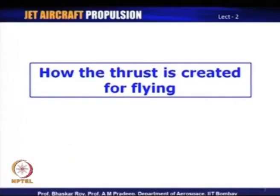Aircraft is a flying body. The needs of the flight of an aircraft are to be met with the propulsive system. The propulsion system we are creating essentially goes with the aircraft — it is part of the aircraft, sometimes embedded within the aircraft. Let us take a look at how the thrust is created for flying. Flying is our main object and thrust creation is essentially for the purpose of flying.